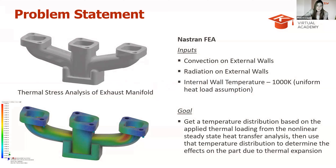The simulation will be comprised of two separate analyses: first, a non-linear steady-state heat transfer, followed by a thermal stress analysis. Our goal is to get a temperature distribution based on the applied thermal loading from the heat transfer analysis, and then use that distribution to determine the effects on the part due to thermal expansion. The ANSYS team will do this same simulation using the same exhaust manifold, but instead of assuming a single uniform wall temperature, they will use an internal wall temperature distribution from CFD for higher fidelity results.